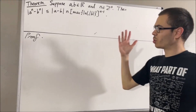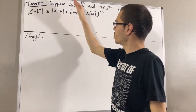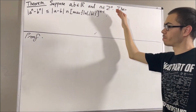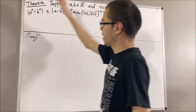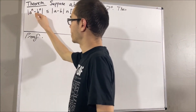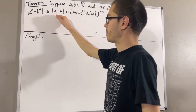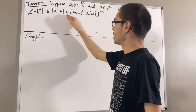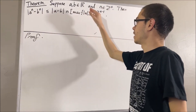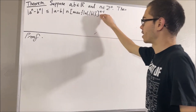In this video, we're going to prove the following theorem. Suppose a and b are real numbers and n is a positive integer. Then the absolute value of a to the n minus b to the n is less than or equal to the absolute value of a minus b, times n, times the maximum of absolute value of a and absolute value of b, to the power of n minus 1.